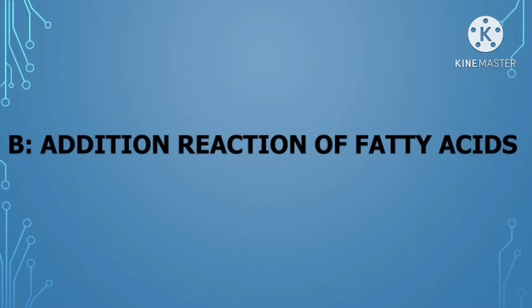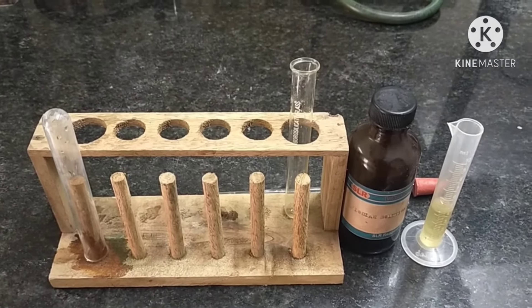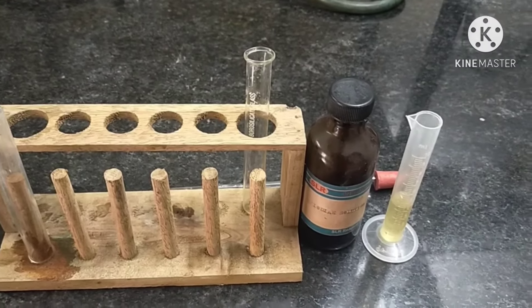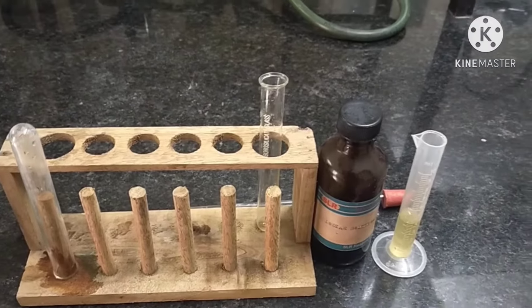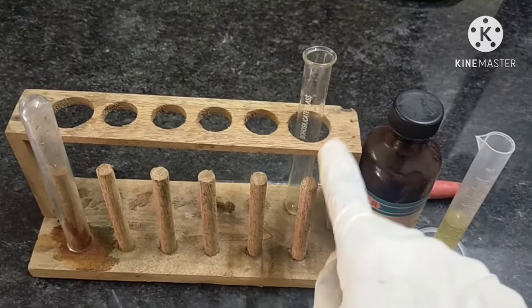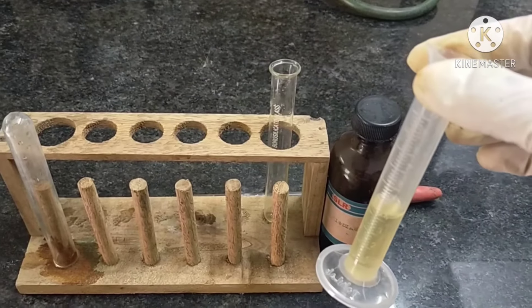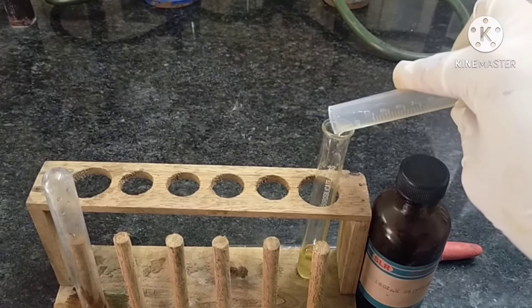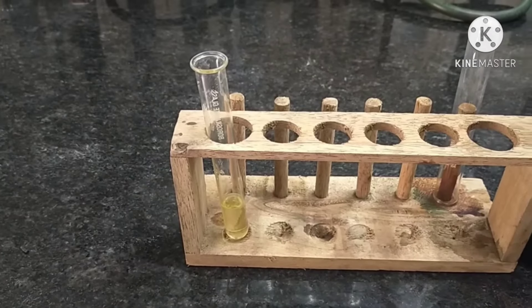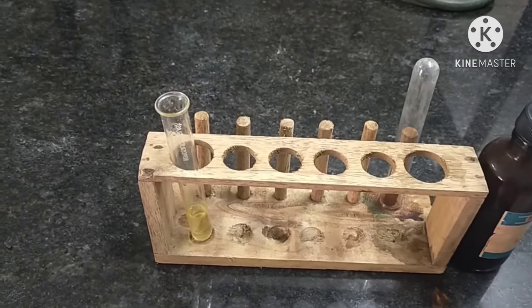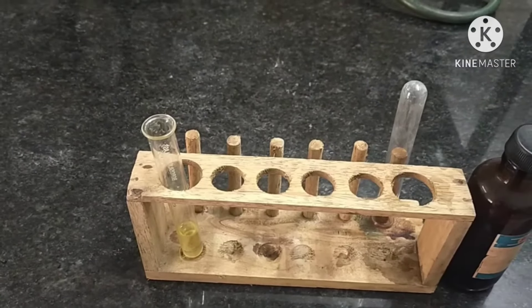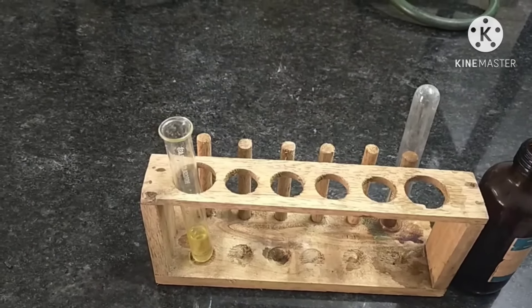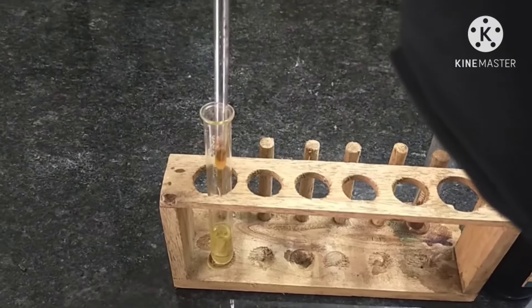Let's move on to the next test: addition reaction of fatty acid. To perform this experiment we require different types of oil — here I take groundnut oil — and also iodine solution. Take one dry test tube, add 2-3 ml of oil measured in the measuring cylinder, and pour it into the test tube. Now add iodine solution using a dropper like this.